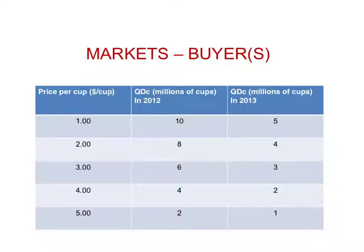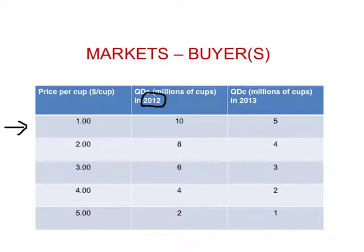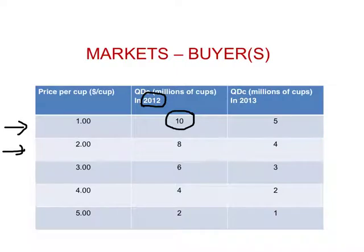Suppose we are looking at the numbers from my previous video applied to 2012. When the price was $1 per cup, 10 million cups of coffee was demanded. When the price was $2 per cup, 8 million cups of coffee was demanded, and so on.